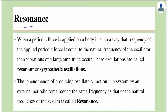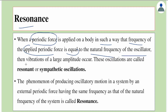Let's study about resonance. When a periodic force is applied on a body such that the frequency of the applied periodic force is equal to the natural frequency of the oscillator, then vibrations of large amplitude occur. These oscillations are called resonant or sympathetic oscillations, and this phenomenon is called resonance. When an applied periodic force with angular frequency omega_d equals the natural frequency omega_naught, the amplitude becomes greater.